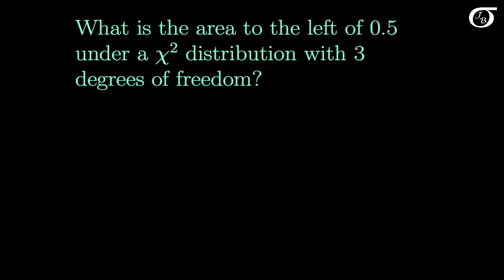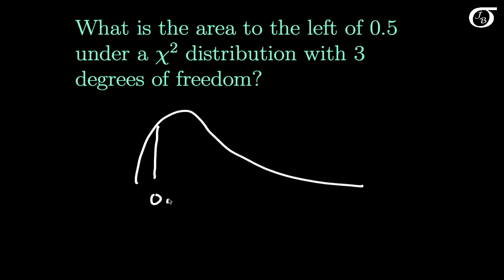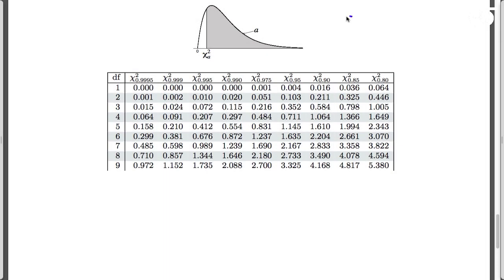What is the area to the left of 0.5 under a chi-square distribution with 3 degrees of freedom? The chi-square distribution with 3 degrees of freedom looks something like this, and 0.5 is actually a small value under this distribution. What we need to find is the area to the left of 0.5.